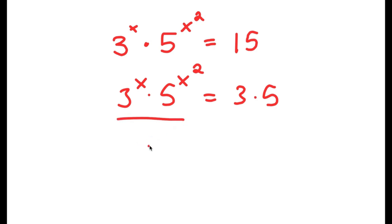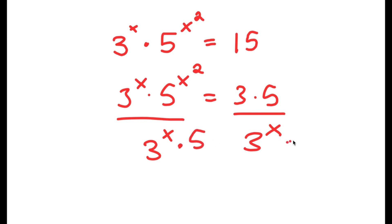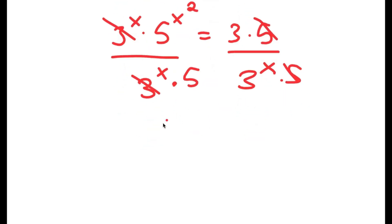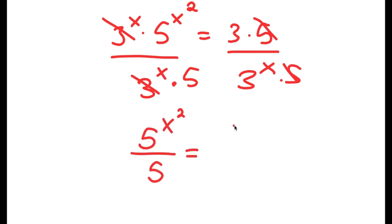Now I'm going to divide both sides by 3 to the power of x as well as 5. So then for my left-hand side, both the 3 to the power of x's cancel out. For my right-hand side, both the 5's cancel out. So now I get 5 to the power of x squared over 5 is equal to 3 over 3 to the power of x.